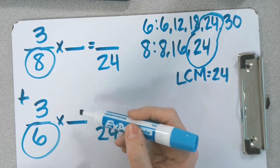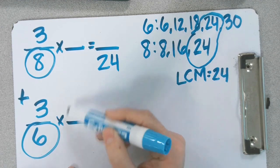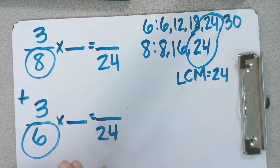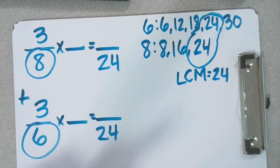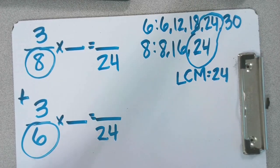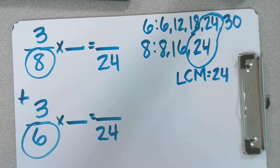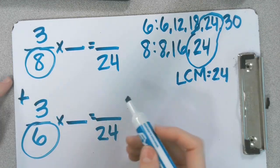Because it doesn't change the value. That's like whole numbers, too. If we do 4 times 1, it gives us what? What is 4 times 1? 4. The value didn't change. Same thing here.